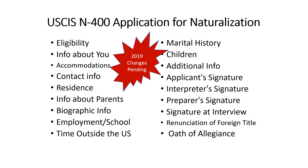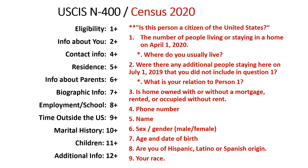Then there's additional information where they talk about your moral character — that is not covered on the census. And finally there's the signature and the oath of allegiance. Here's a side-by-side comparison of the N-400 and the Census 2020. I've included the most important parts of the N-400 and I'm comparing them to the questions that will be answered on the Census 2020.